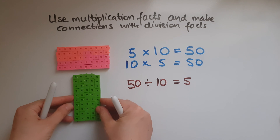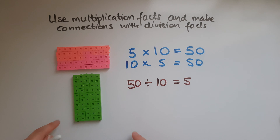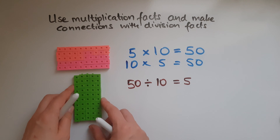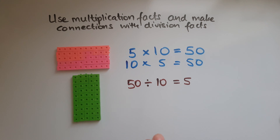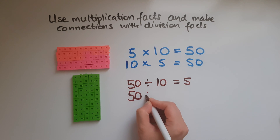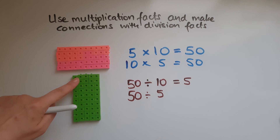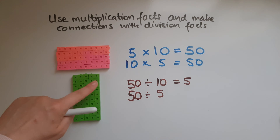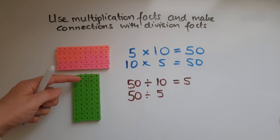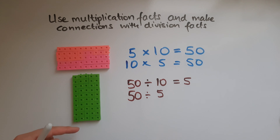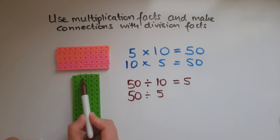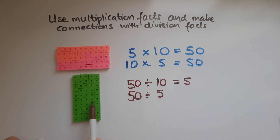Or I could take this 50 and share it into fives. I've got 5 in the first row, in the second and so on. So how many rows of 5 cubes each do I make? There is 1, 2, 3, 4, 5, 6, 7, 8, 9, 10. So dividing 50 by 5 gives me 10.